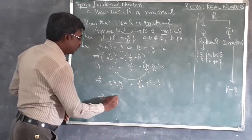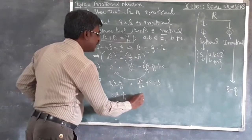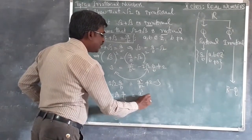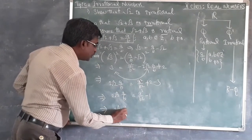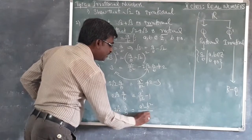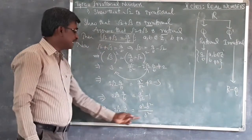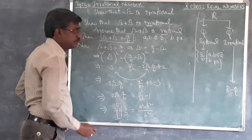Again this implies 2 root 2 into A by B is equal to A square minus B square by B square. Now taking the same thing, again let us have root 2 at the left side.